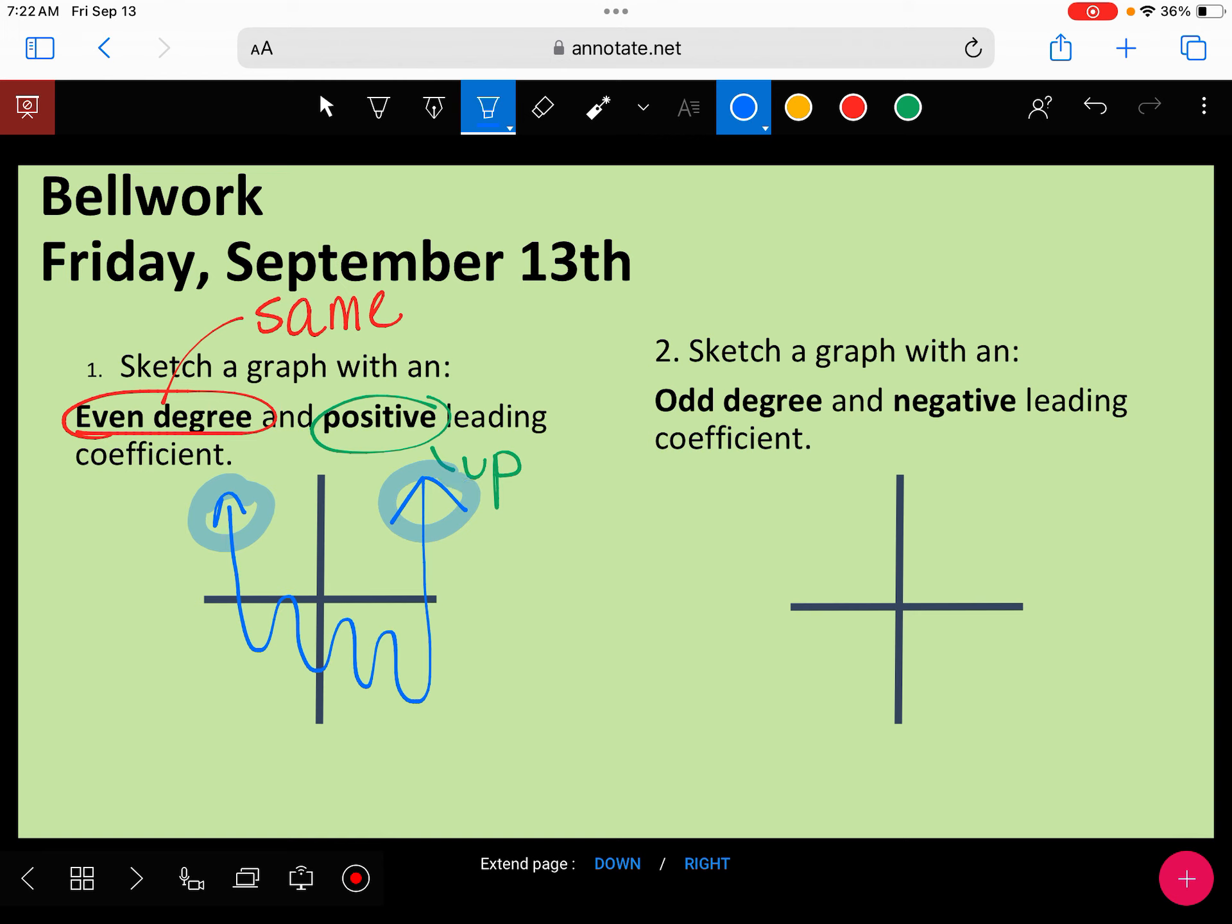Both ends have to go up. So for an odd degree, odd, they don't go the same direction. They go opposite. And because it's negative, I know that the right side is going to go down.